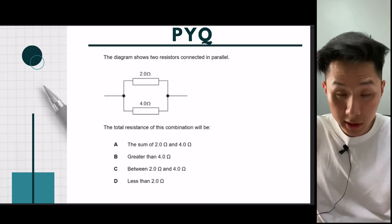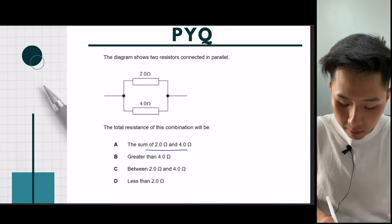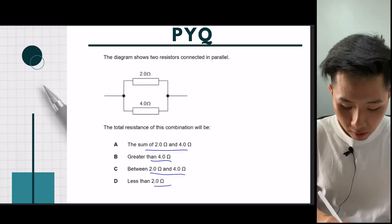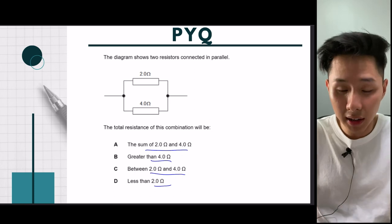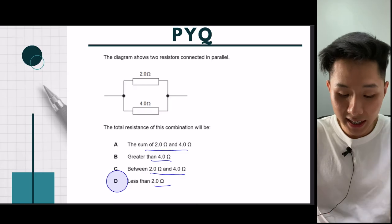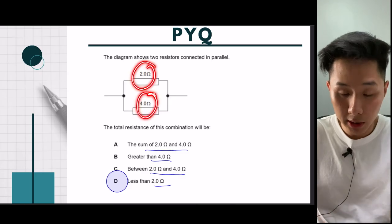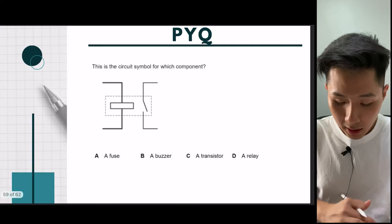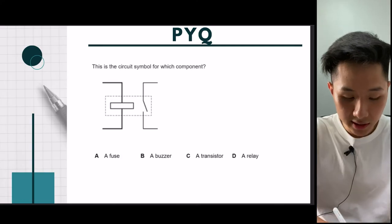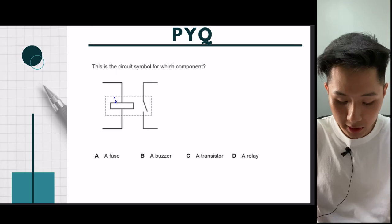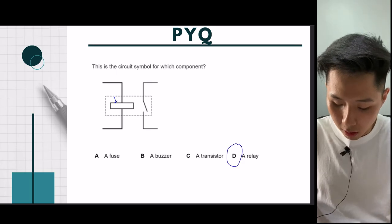Second question: the total resistance of two resistors in parallel will be less than either individual resistor — the answer is D. Next question: what circuit symbol shows a magnetizing coil that opens a switch? That is called a relay.